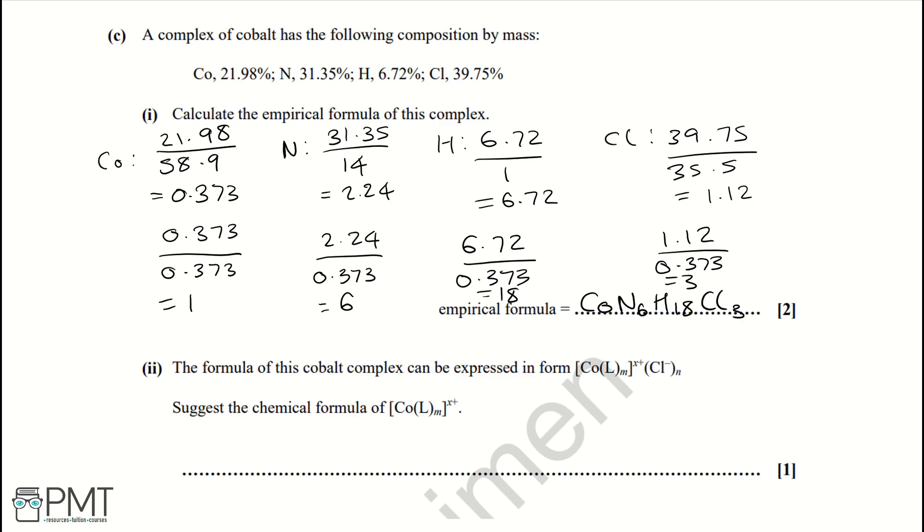So that means the empirical formula is CoN₆H₁₈Cl₃. To get the two marks for this question, you get your first mark for correctly dividing by the relative formula mass and your second mark for then dividing by the smallest to give the correct empirical formula.